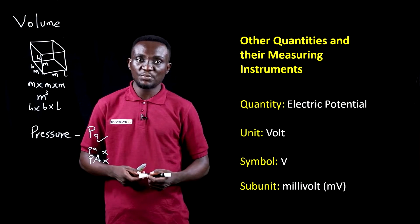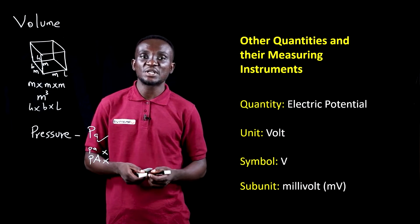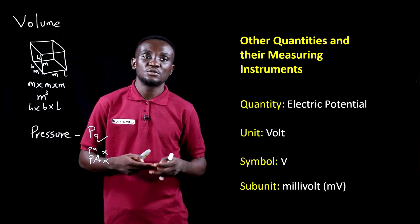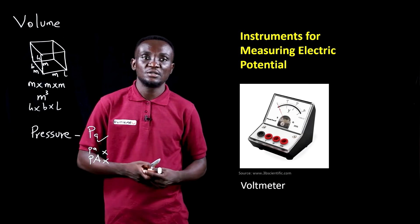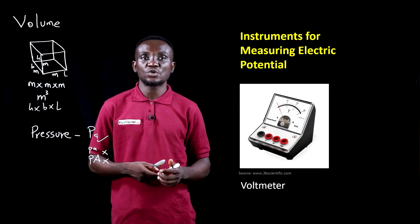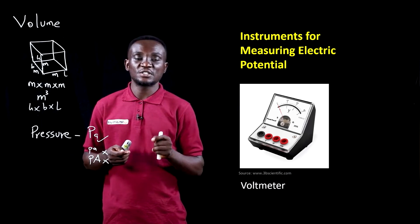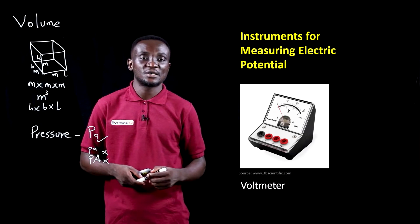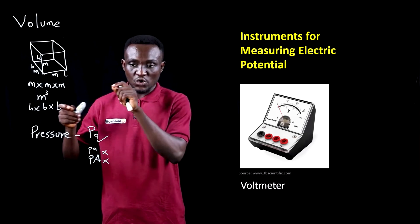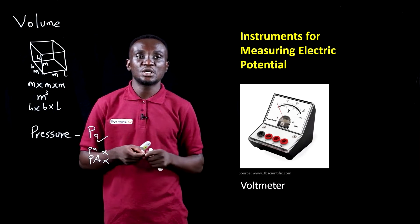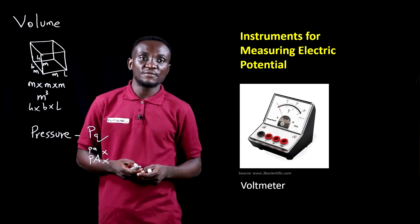Next is electric potential, measured using the unit volt. The symbol is capital V, and the subunit is the millivolt — small m, capital V. The instrument for measuring voltage is the voltmeter, similar in appearance to the ammeter. It measures the electric potential or potential difference between two points across a conductor, with readings displayed on the front of the voltmeter as shown in the image.